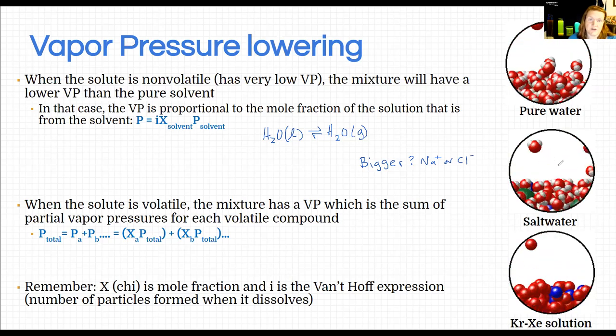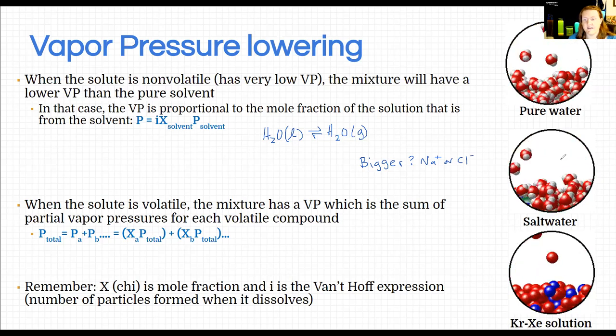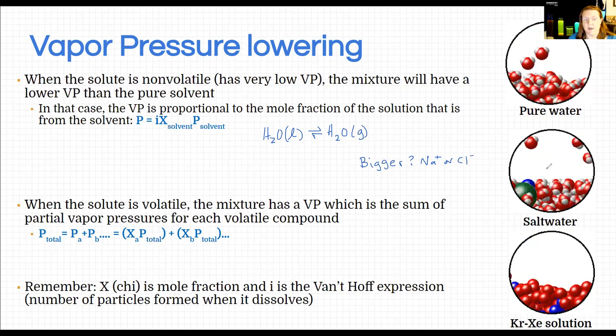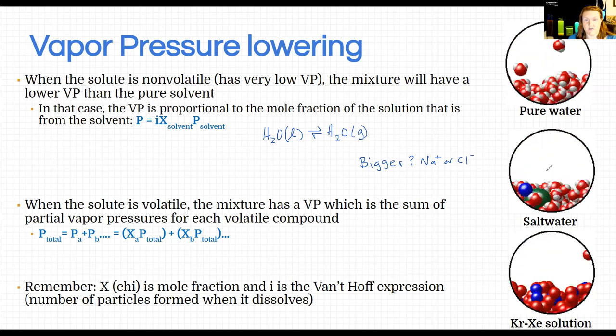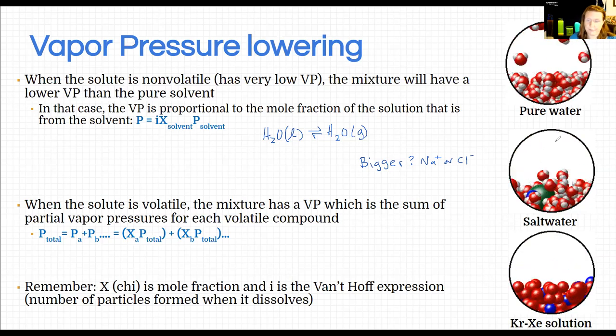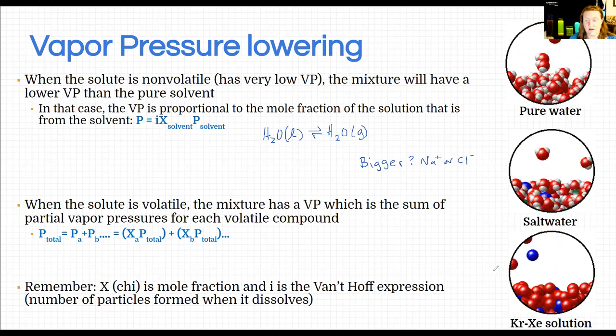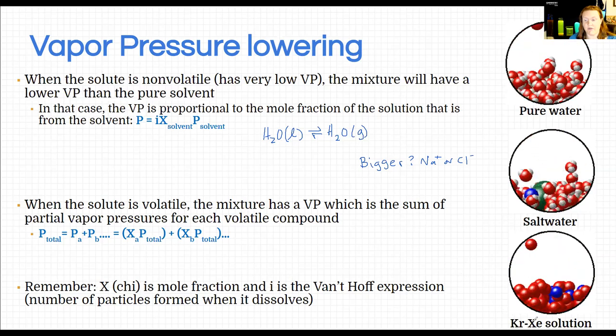That's why the vapor pressure is lower, okay. This is an example when we have a non-volatile solute. In other words, the solute does not evaporate - you don't see any sodium or chlorine up here.